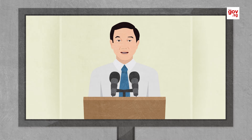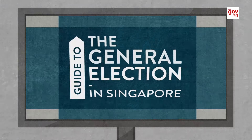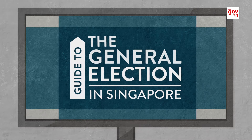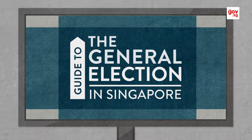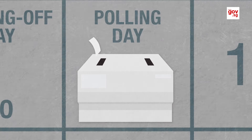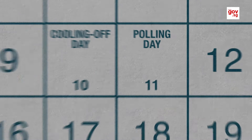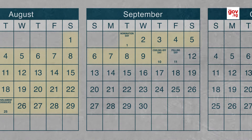Parliamentary General Election 2011. Result for the Electoral Division. Most of us are familiar with what happens on polling day during the General Elections, but what happens before and after polling day?